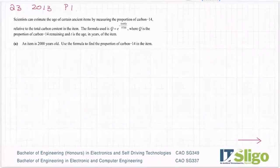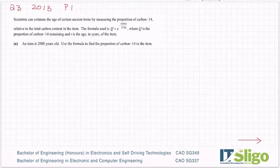Logs question from 2013. Scientists can estimate the age of certain ancient items by measuring the proportion of carbon-14 relative to the total carbon content in the item. The formula used is Q equals e to the minus 0.693T over 5730.